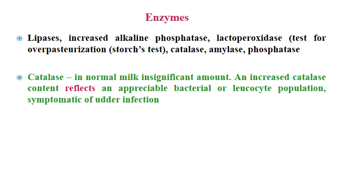Milk normally contains many enzymes including lipases that break down lipids, alkaline phosphatase, lacto-peroxidase — which is used for preservation of milk or for testing over-pasteurization — catalase, amylase, and phosphatase. Phosphatase is used for testing pasteurization efficiency, which will be discussed later. Catalase is very important: in normal milk it is present in insignificant amounts, but an increased catalase content reflects an appreciable bacterial or leukocyte population, indicating some kind of infection.